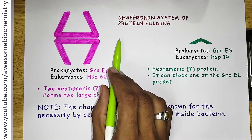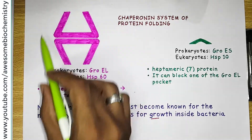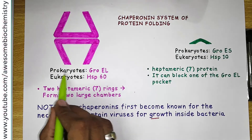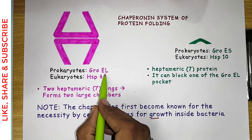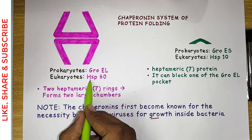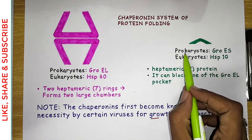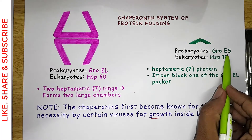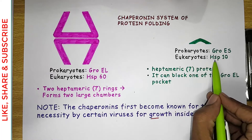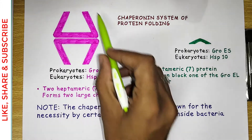As you can see, the chaperonin system is made up of two major proteins. Inside prokaryotes, the first protein is known as GroEL. The structurally and functionally similar counterpart in eukaryotes is known as HSP60. The second protein in prokaryotes is known as GroES. Similarly, the structurally and functionally similar protein in eukaryotes is known as HSP10. Now let's examine the structure of GroEL.